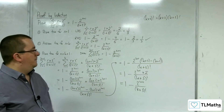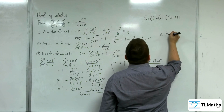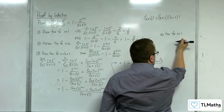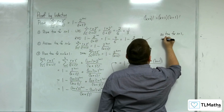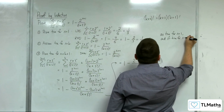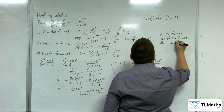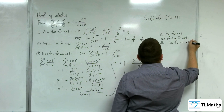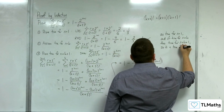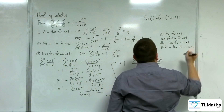As it was true for n equals 1, and if true for n equals k we showed it was true for n equals k plus 1, it is therefore true for all natural numbers n greater than or equal to 1. That completes the proof.